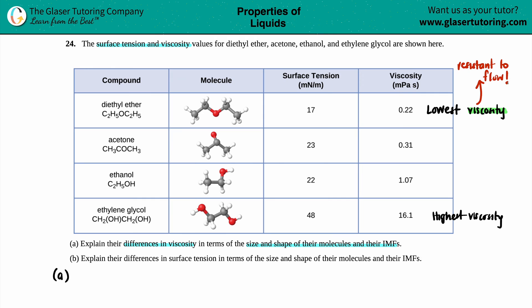The two extremes I like to give are water versus honey. Water — if you're flipping a water bottle all over the place, the water is right there with you. It is not resistant at all, so water has a low viscosity. As opposed to honey — when you're sick and you want tea with honey, it takes so long for that honey to drip out of the bottle. That's high viscosity; it does not want to flow. It is so resistant to flow.